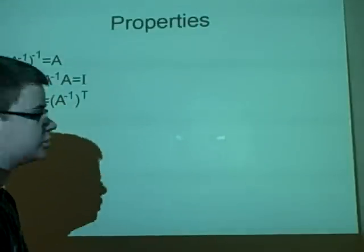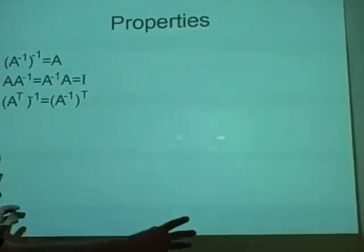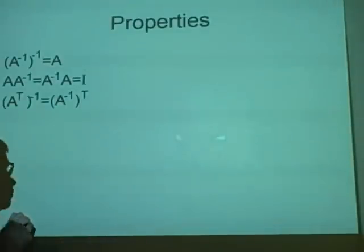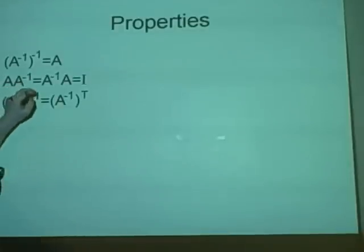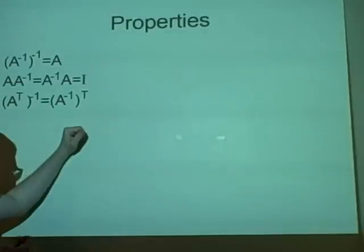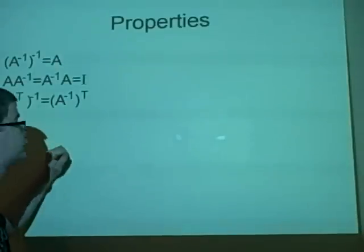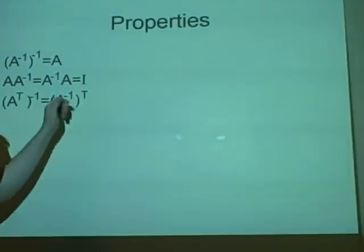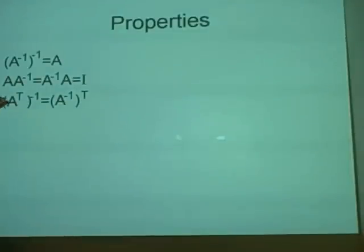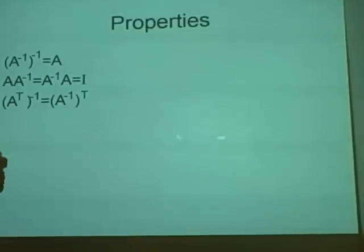One last slide with a couple of properties. The inverse of A inverse is A — you're multiplying something by something and going backwards to get A. Also, A times A inverse equals A inverse times A — that's clear, though we have to be careful because normally AB does not equal BA. Finally, A transpose inverse equals A inverse transpose, so it doesn't matter what order you apply the transpose and inverse operations.